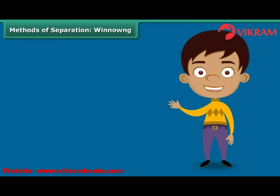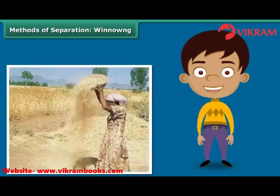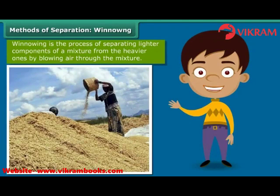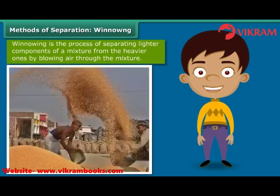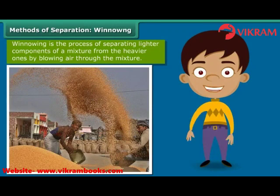During your numerous train trips through the countryside, you would have noticed women standing at a height, shaking a basket held over their heads continuously. They are separating the grain from the husk by simply allowing the wind to blow away the husk and other lighter impurities. The heavier grain falls down on the ground in a heap. This process of separating impurities from the grain by allowing a current of air to blow away the lighter impurities is known as winnowing.